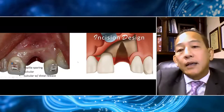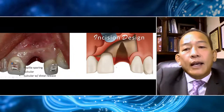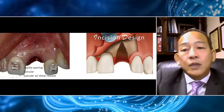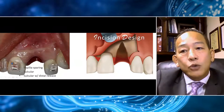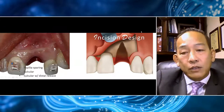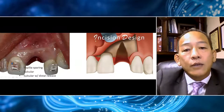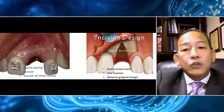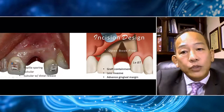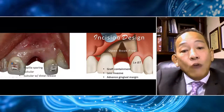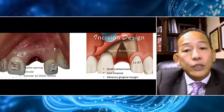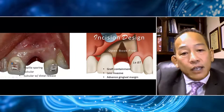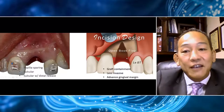I propose a hybrid of these incisions that I call the open book incision. I make one distal, site-specific — not a distant vertical — release. The site-specific vertical incision follows the mucogingival junction and back-cuts up to the vestibule. A subperiosteal pouch is then released on the other side. The advantage of this incision is that it allows me to contain my graft. The graft has nowhere to go except within the apical and lateral boundaries — it's like a pouch. It's less invasive, and secondarily I can advance the soft tissue coronally to gain a high crest.